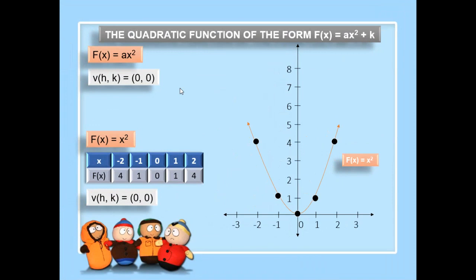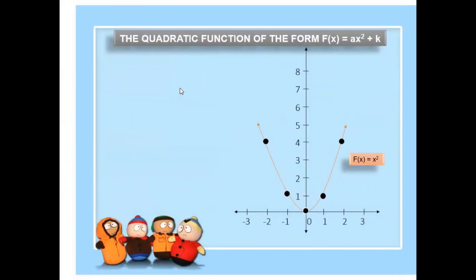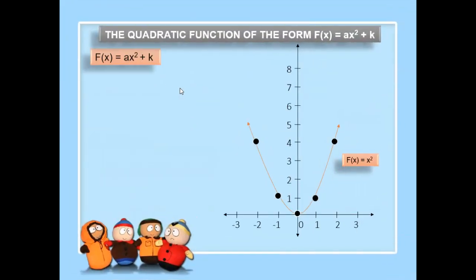We will consider the quadratic function of the form a x squared with vertex at the origin as our reference graph. Now we move to the quadratic function of the form a x squared plus k, in which our vertex hk is equal to (0, k).